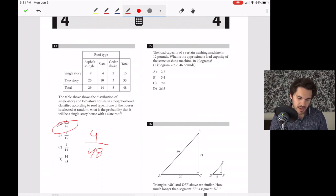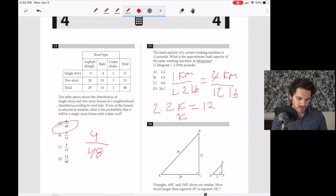Number 15. The load capacity of a washing machine is 12 pounds. What is the approximate capacity in kilograms? Set up a proportion: 1 kilogram over 2.2 pounds equals x over 12 pounds. So 2.2x equals 12, and x equals 5.4.